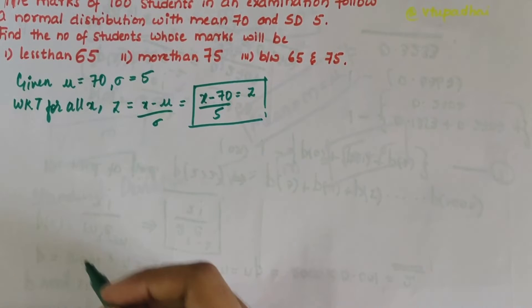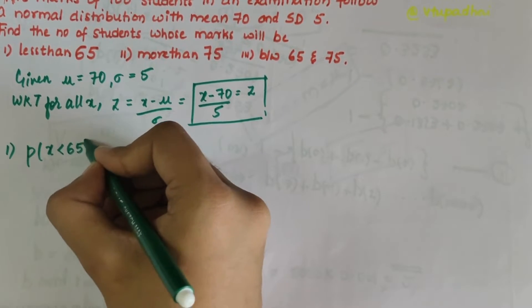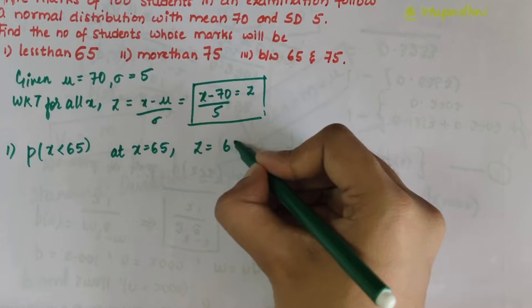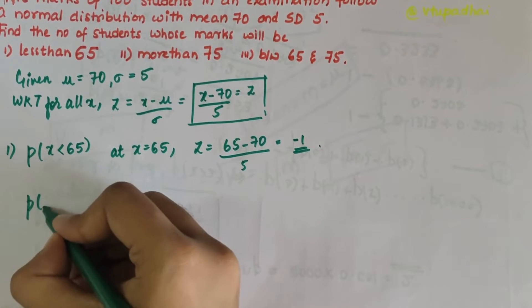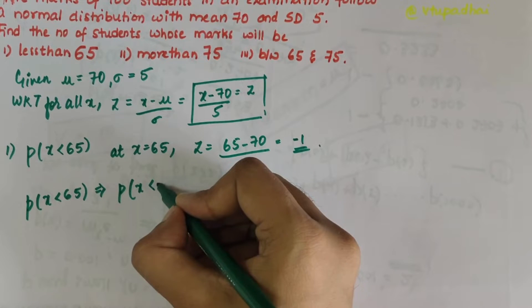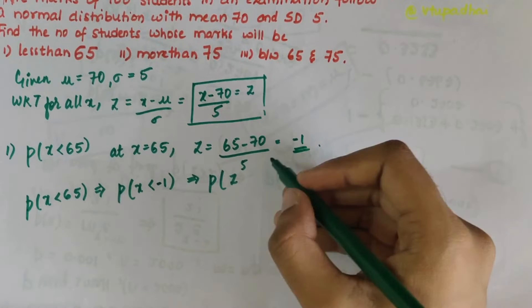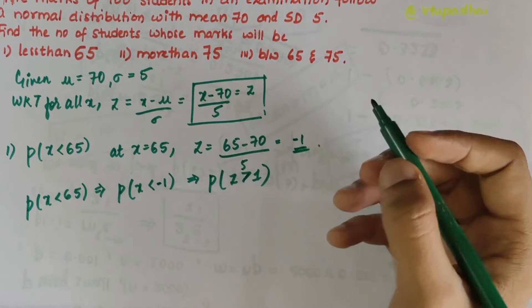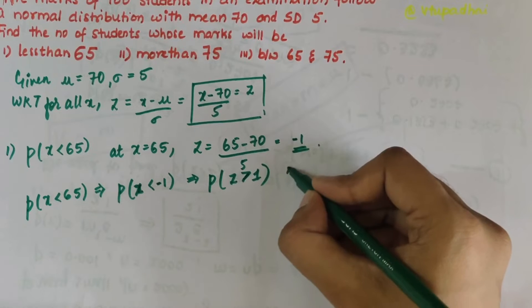For the first part, P(x < 65): at x = 65, the z value is (65 - 70) / 5 = -1. So P(x < 65) is similar to P(z < -1), or by symmetry, P(z > 1).